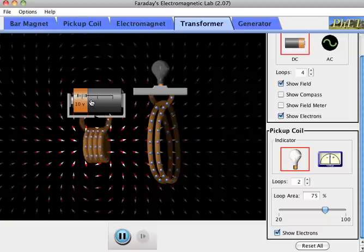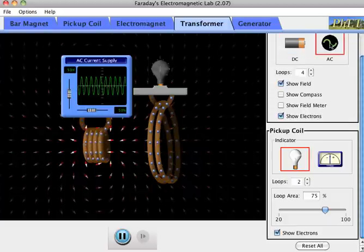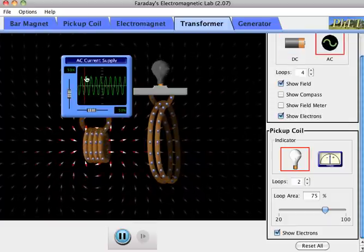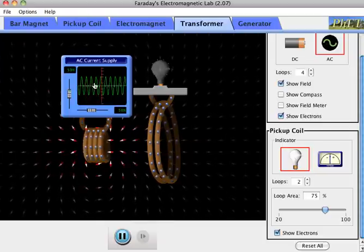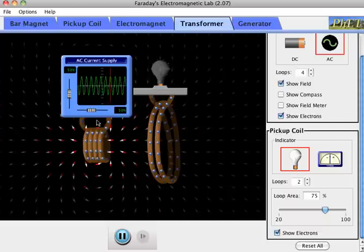I don't want to flip my battery around left and right all the time, but we have another way out, and that's called an AC voltage, where I just switch the voltage back and forth sinusoidally. And what happens if I switch it back and forth?